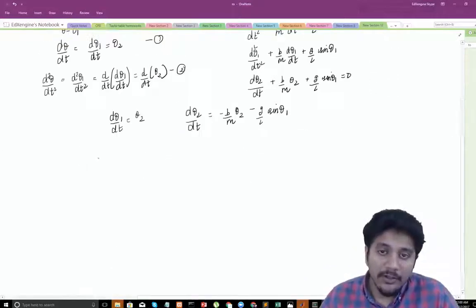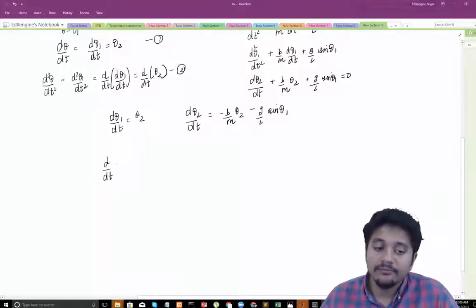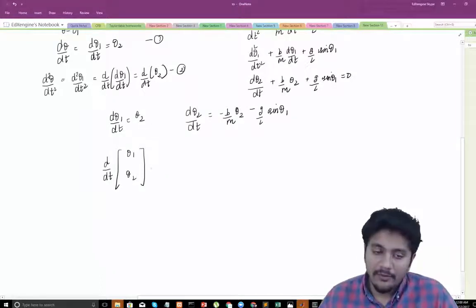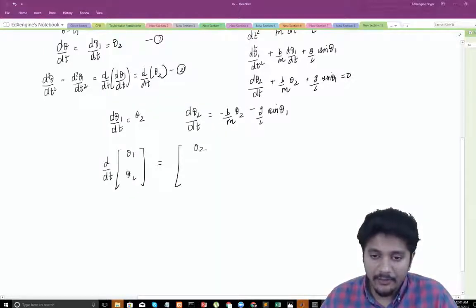So then what we are going to do is we are going to say that d by dt of theta 1 and theta 2, we are just writing the equations down in matrix form and this is going to be equal to theta 2 in the first case minus b by m theta 2 minus g by l sin theta.